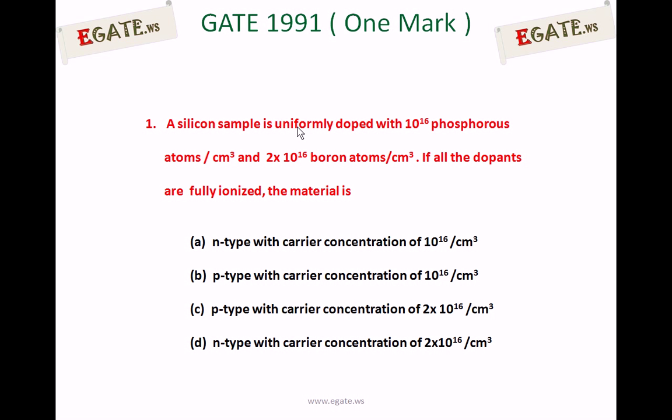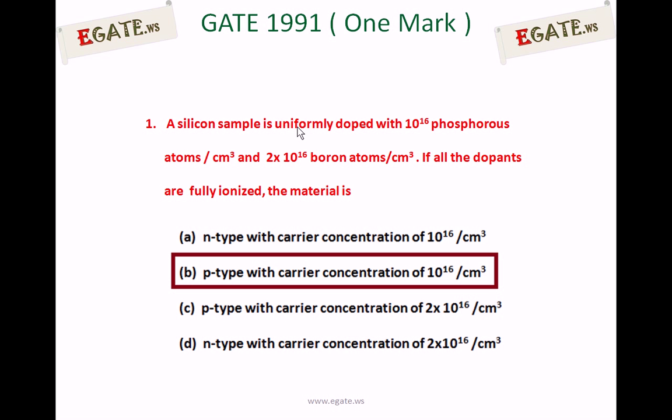The right answer for this question is B — P-type with carrier concentration of 10^16 per centimeter cube.